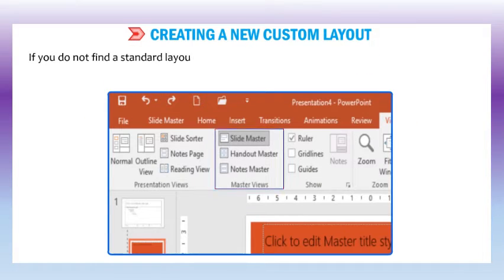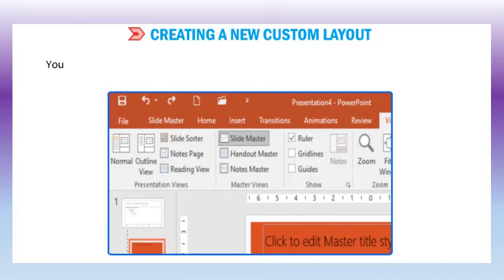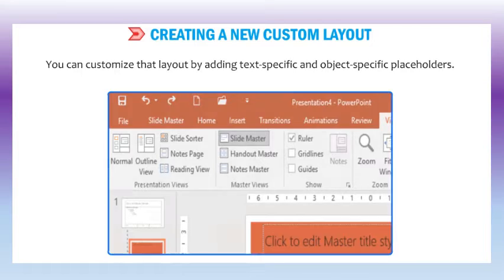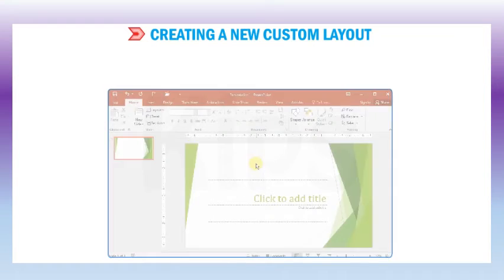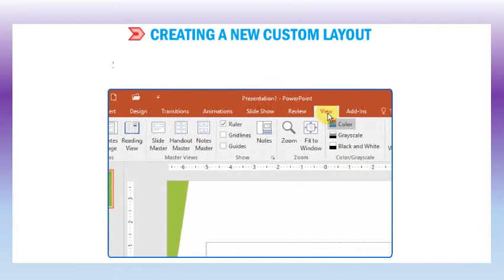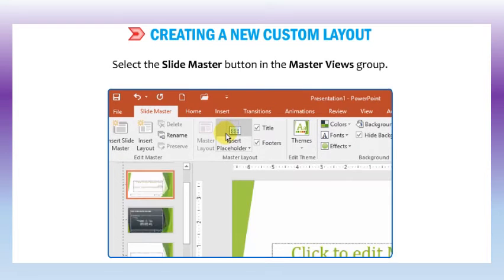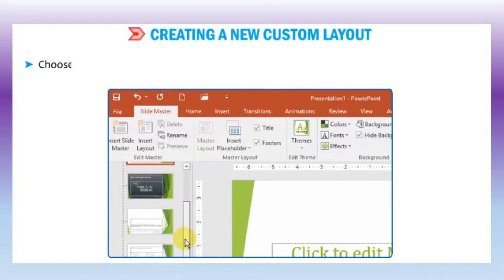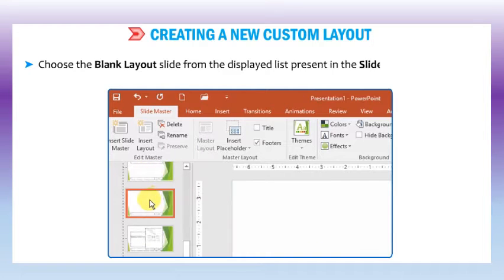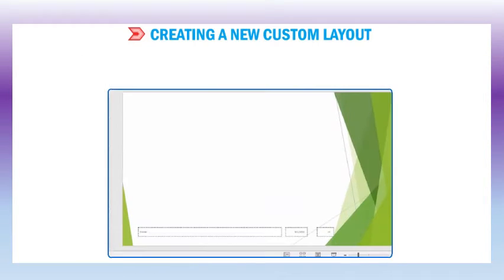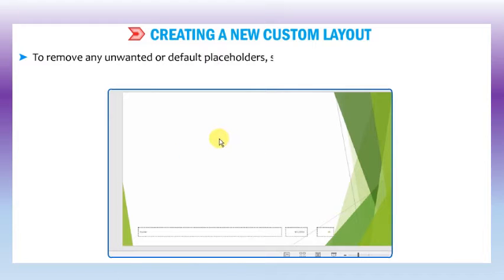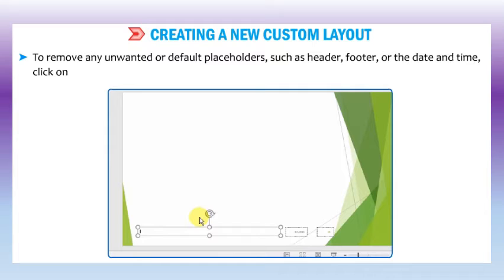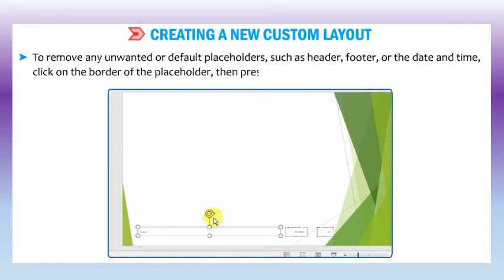Let us learn how to create a new custom layout. If you do not find a standard layout that suits your needs, you can create a custom layout that perfectly suits your slide content. You can customize that layout by adding text-specific and object-specific placeholders. Click on the view tab and select the slide master button in the master views group. Choose the blank layout slide from the list in the slide master task pane. To remove any unwanted or default placeholders such as header, footer, or date and time, click on the border of the placeholder then press the delete key.